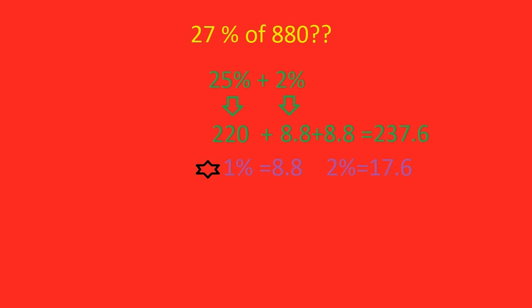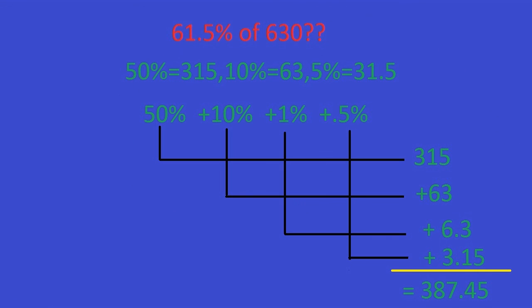Finally, let us find out 61.5% of 630. Well, to split up 61.5% you may need some practice. I have split it into 50%, 10%, 1% and 0.5%. 50% is half of 630 which is 315, 10% is 63, 1% is 6.3 and 0.5% is half of it which is 3.15. Adding them, we get the answer 387.45.